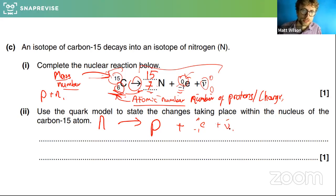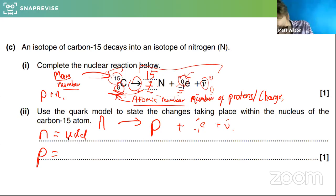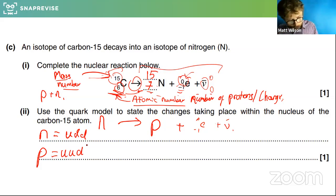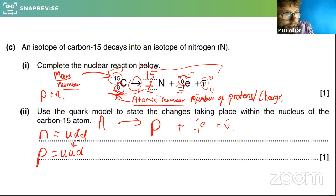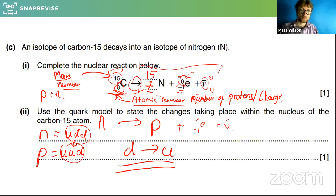A neutron is up-down-down, and a proton is up-up-down. So if a neutron becomes a proton, a down quark has become an up quark — absolutely right. That's what they're looking for: a down quark becomes an up quark. Stating 'up-down-down becomes up-up-down' would also have been sufficient for the mark.